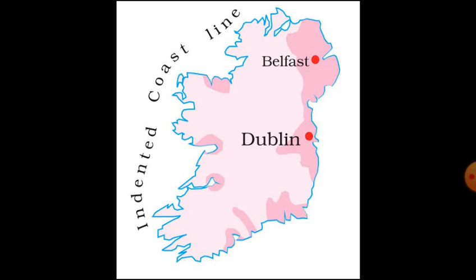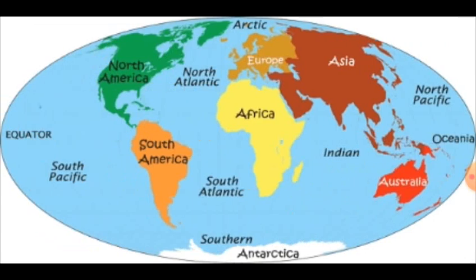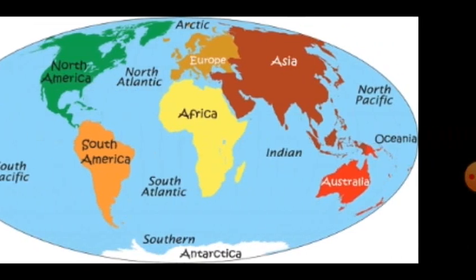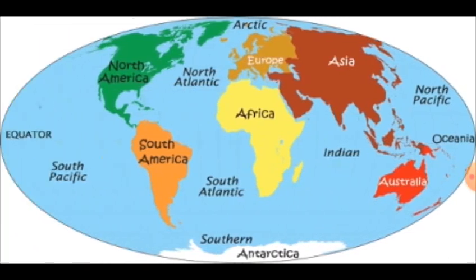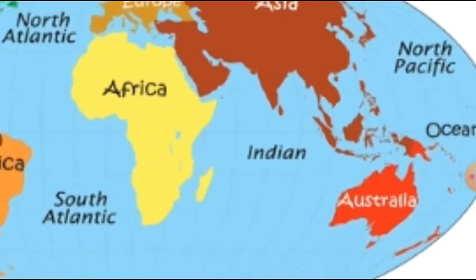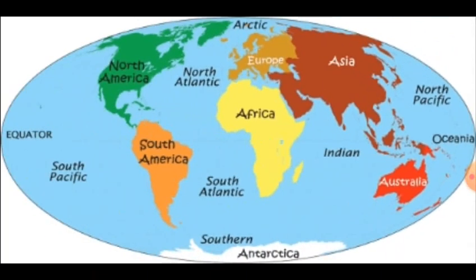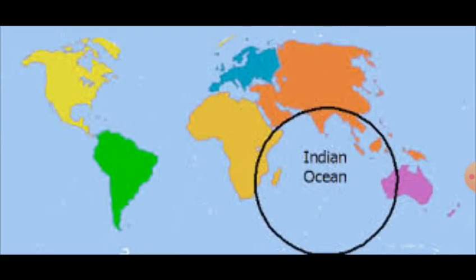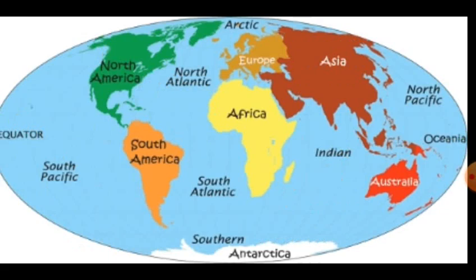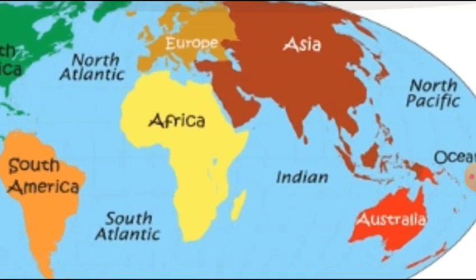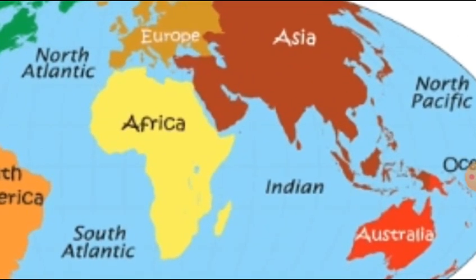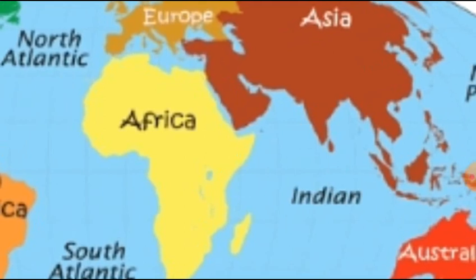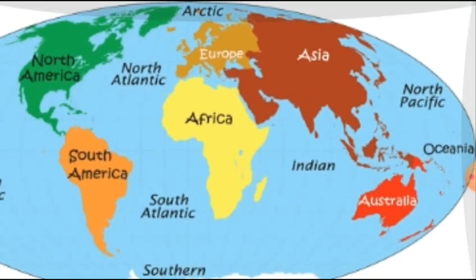The Indian Ocean is the only ocean named after a country, that is India. The shape of the ocean is almost triangular. In the north, the Indian Ocean is bound by Asia, in the west by Africa, and in the east by Australia.